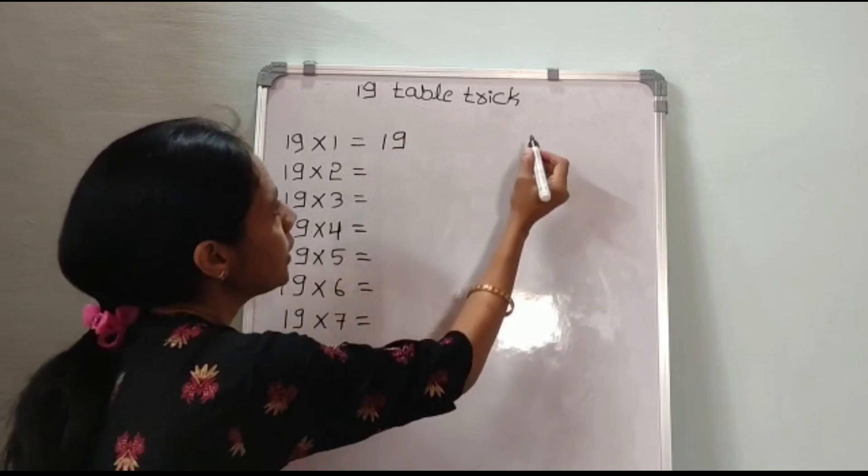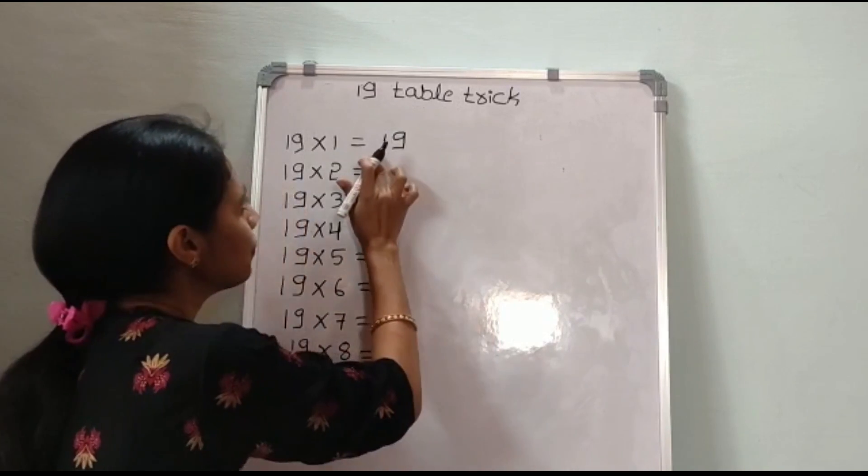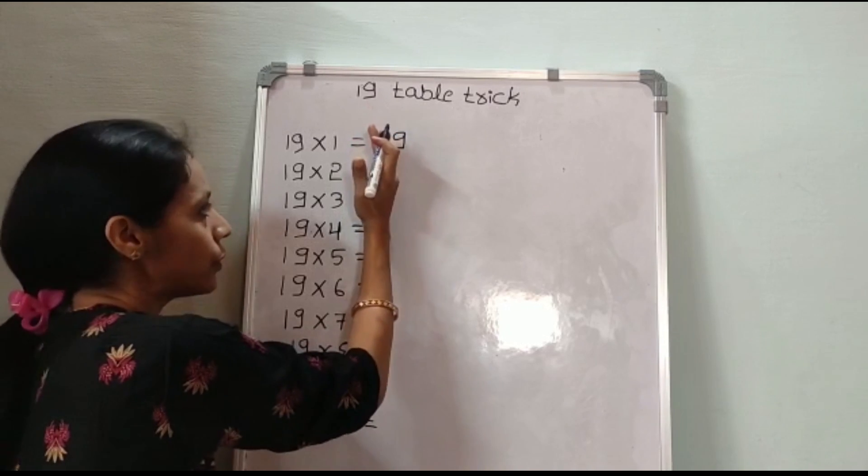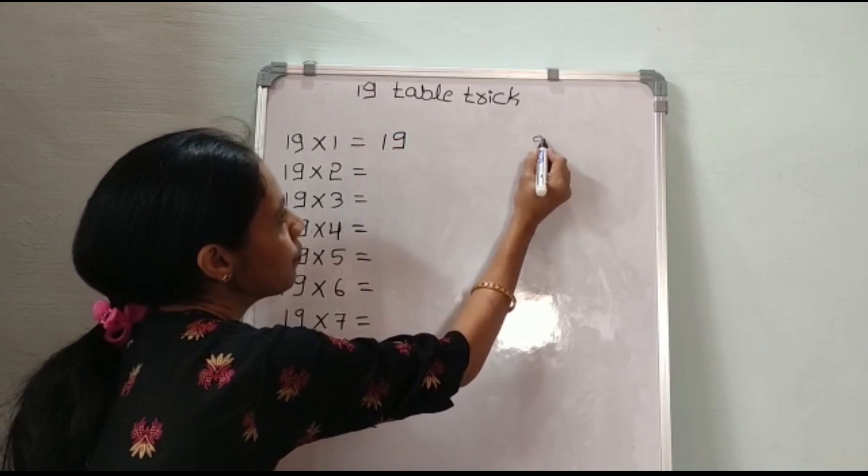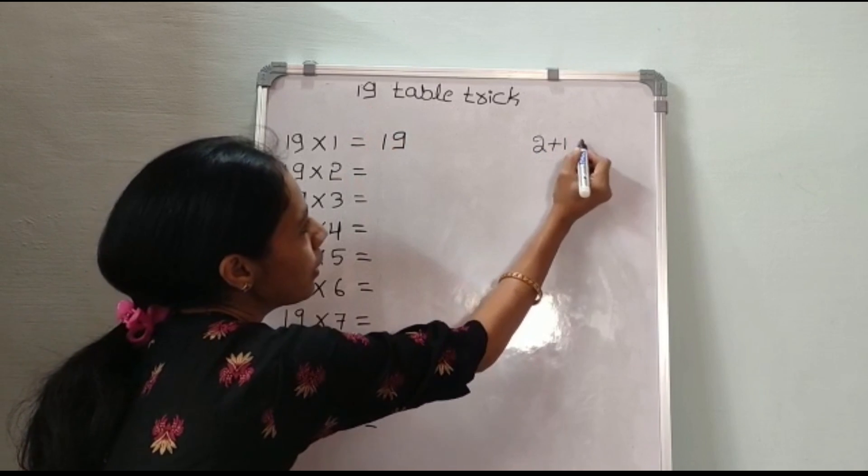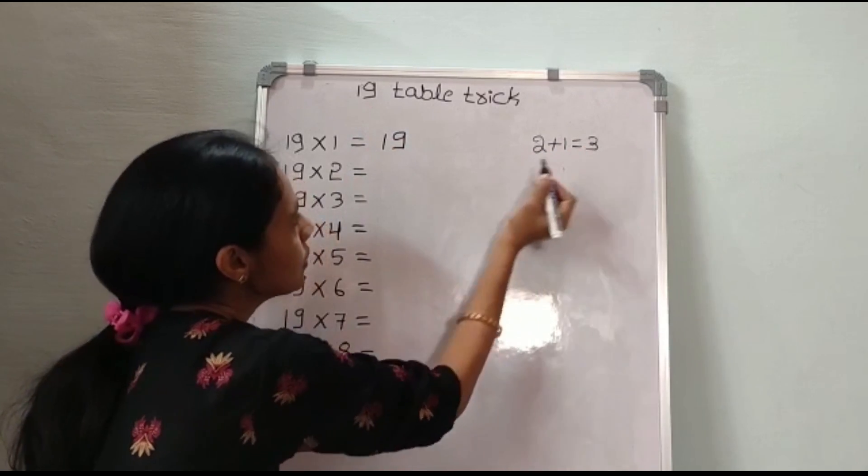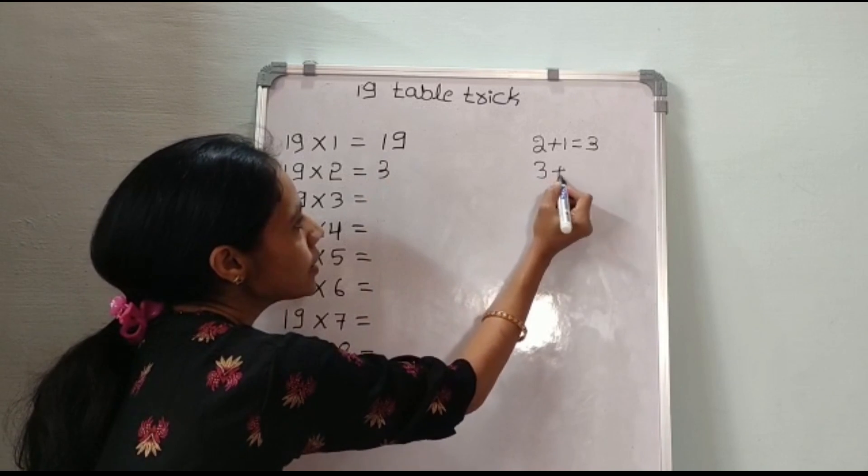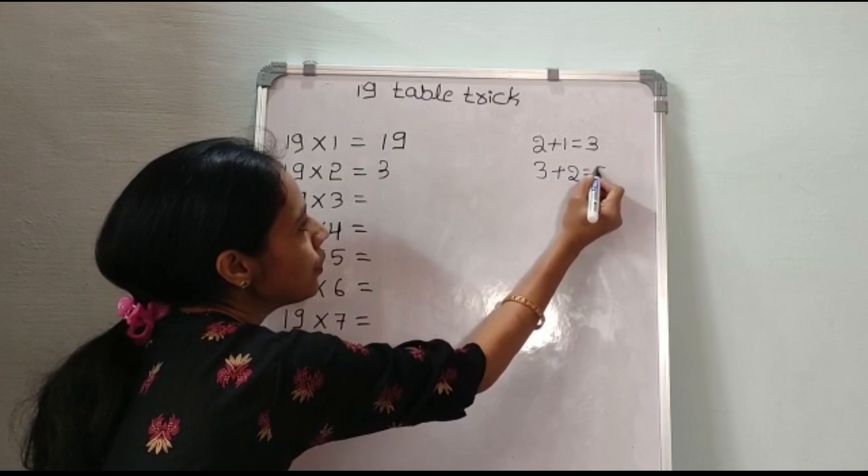After, we write add 2 to the first number. Consider this side. After we add 2, we get 2 plus 1 equals 3. So, next number is 3. 3 plus 2 equals 5.